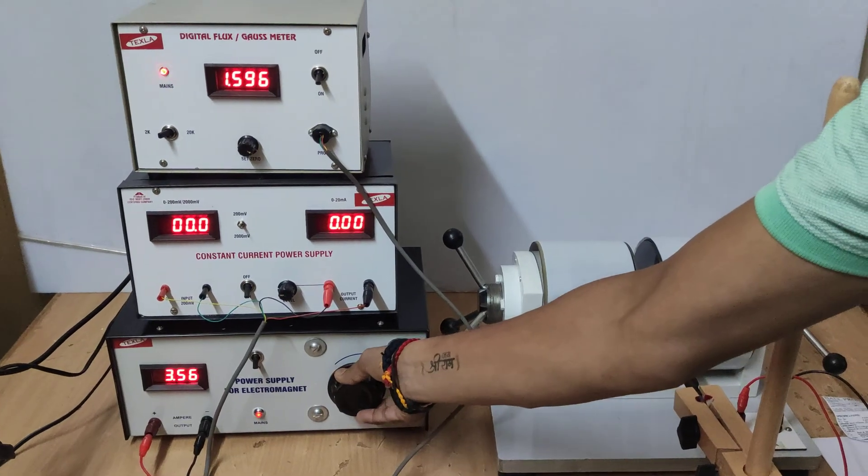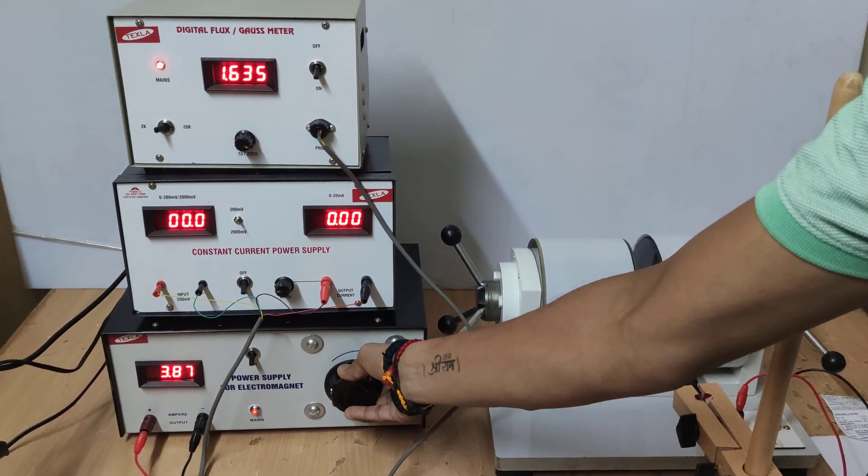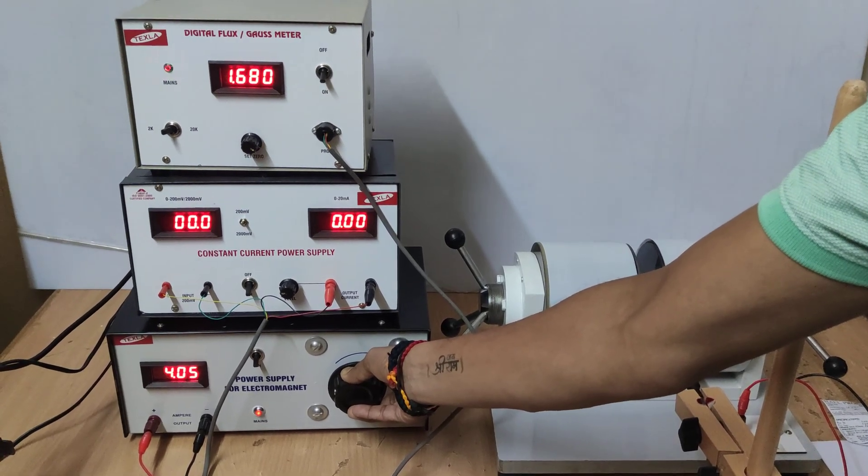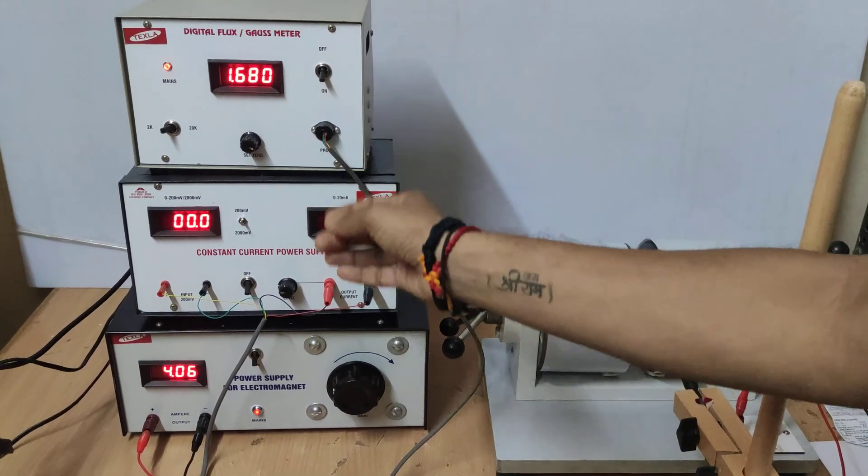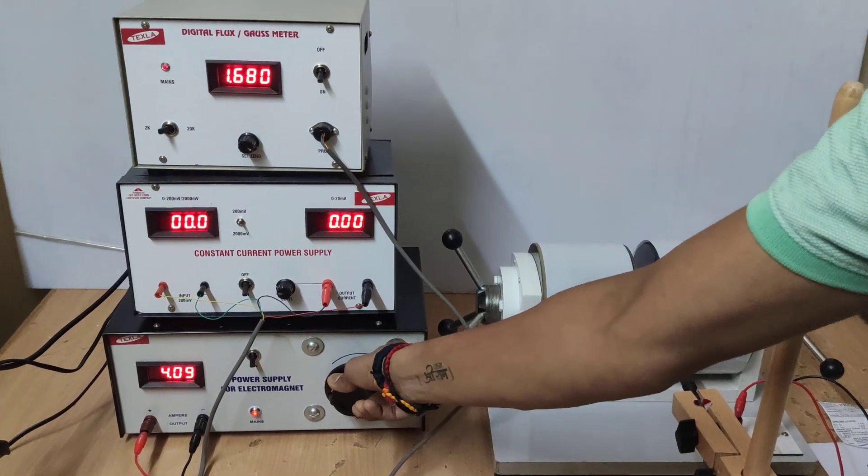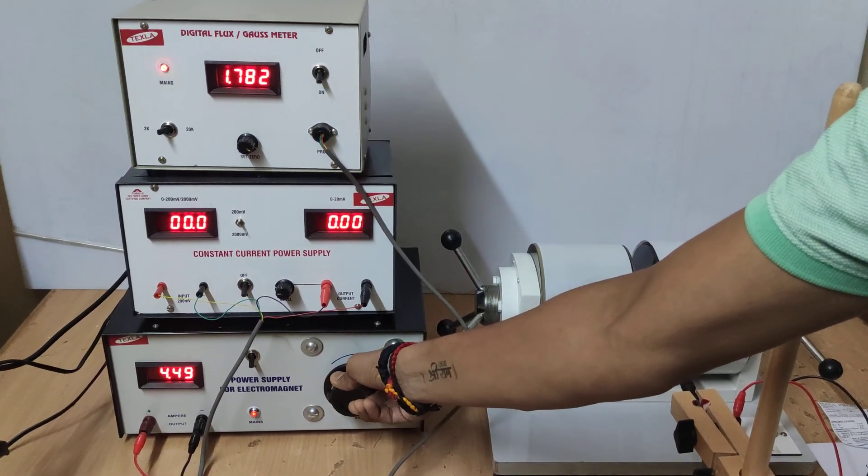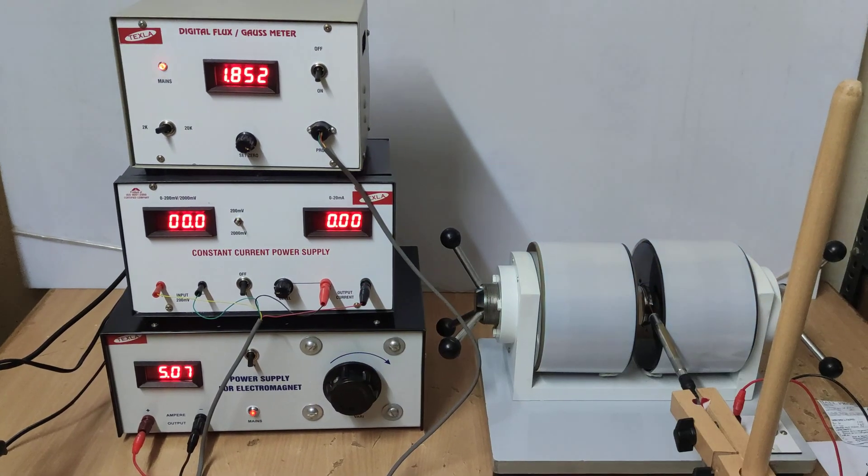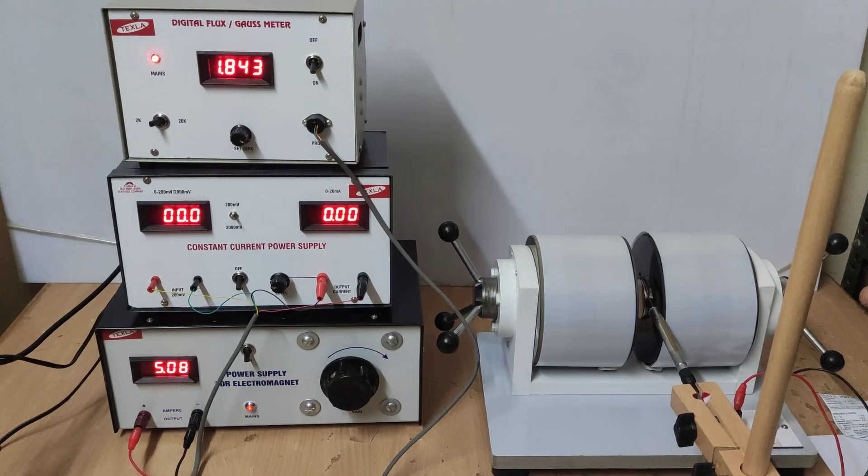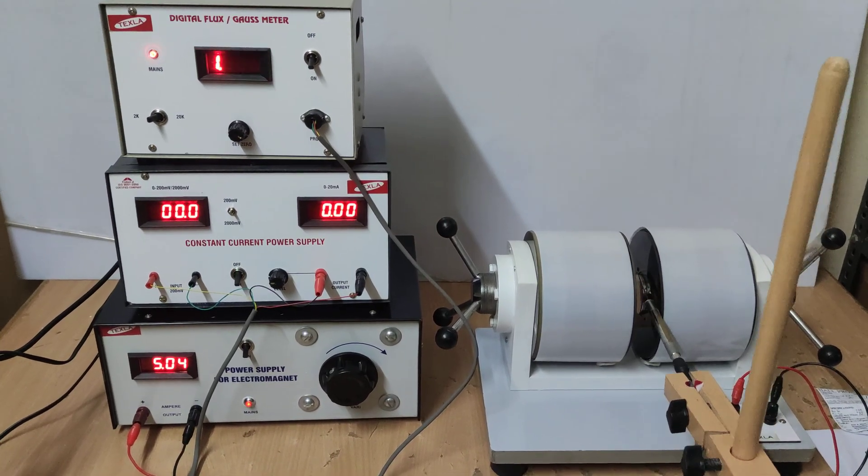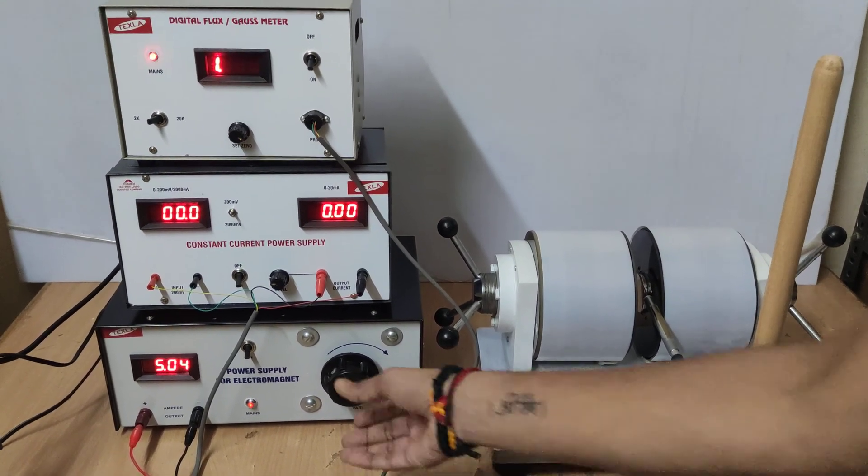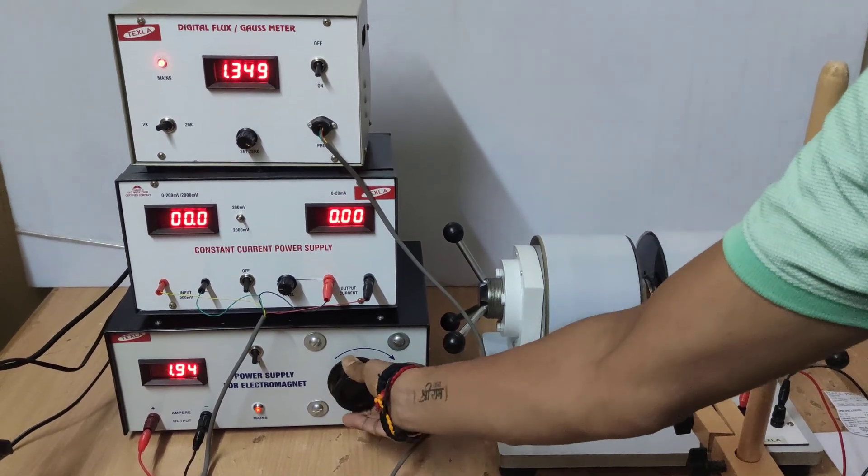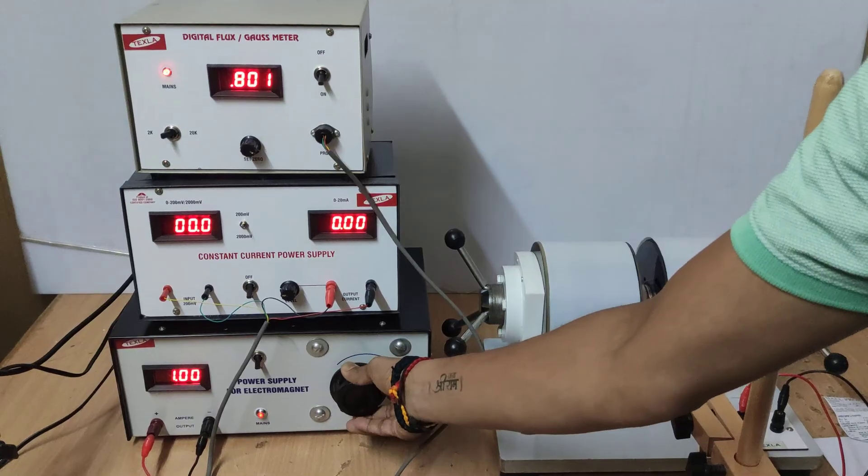But our gauss will exceed 2 kilo gauss. See, for 4 ampere it is giving 1.680 kilo gauss. For 5 ampere, 1.858 kilo gauss for a distance of a boat.